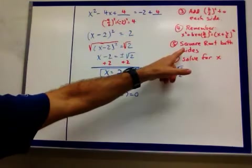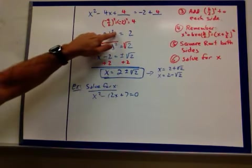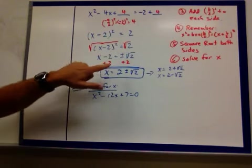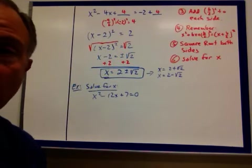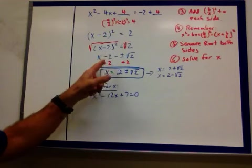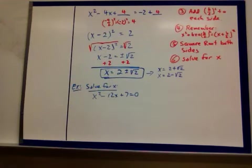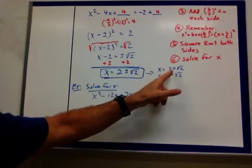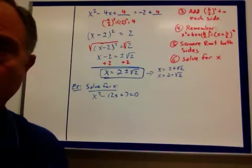Once you get this, now you can square both sides, square root both sides, because that's a square. To get rid of it, you square root. So we just get what's inside, x minus 2. You get plus or minus the square root of 2. Same reason we talked about earlier. And then just isolate the x. Add the 2 over, you get 2 plus or minus the square root of 2. That means x equals 2 plus square root of 2, x equals 2 minus square root of 2.